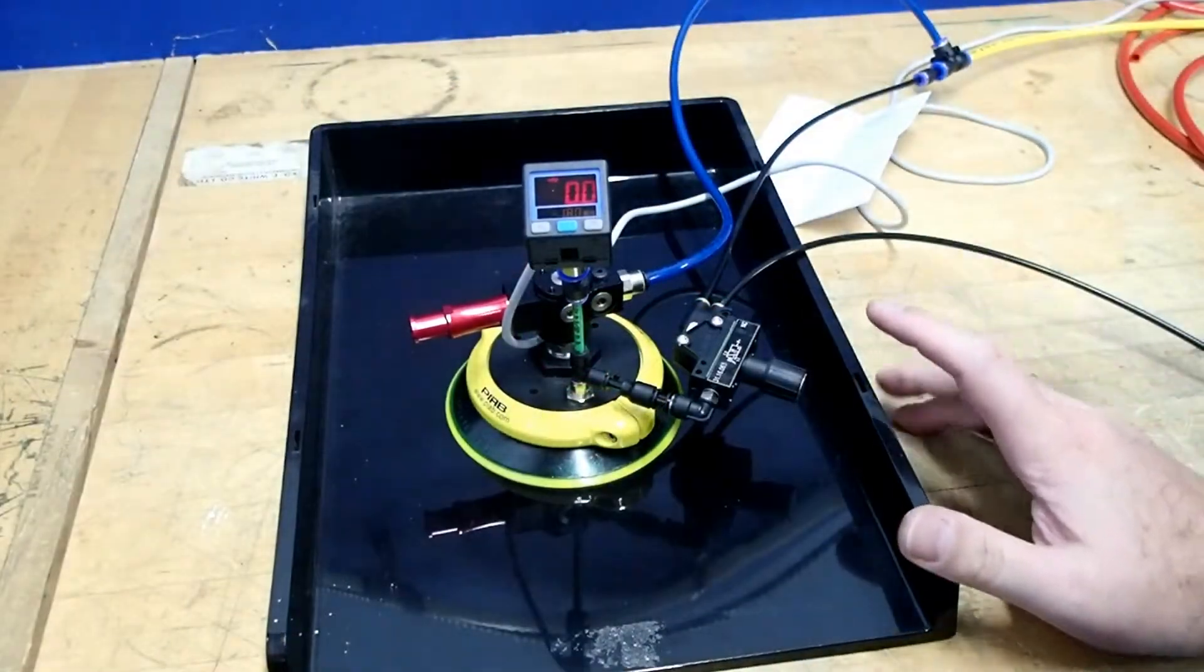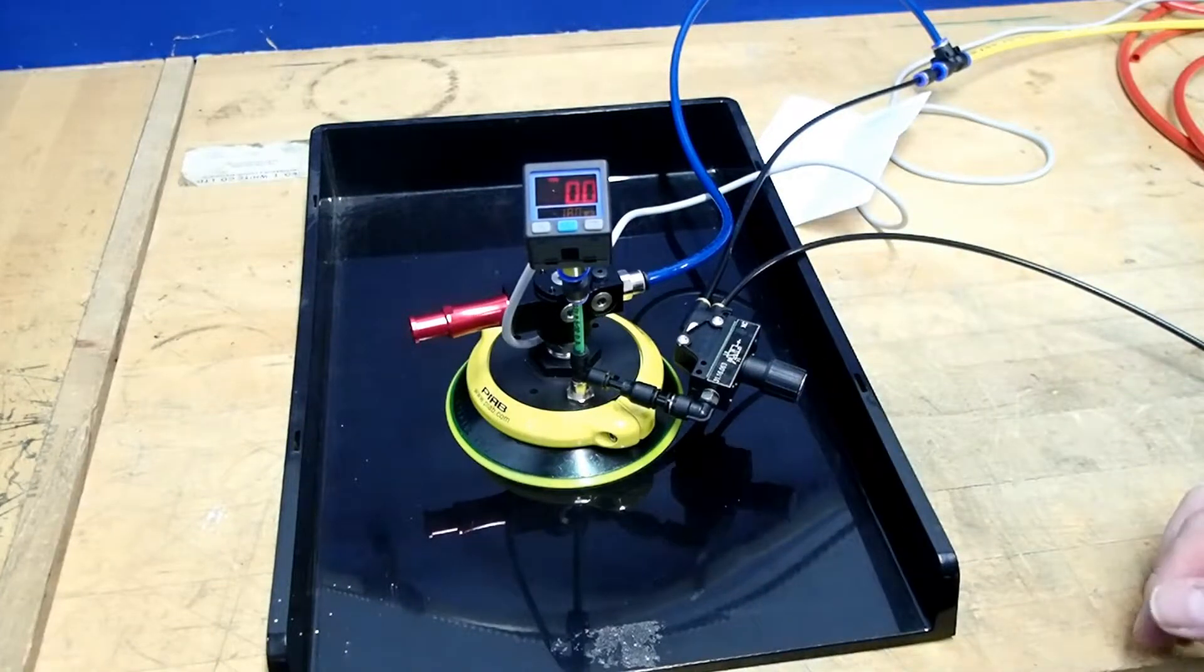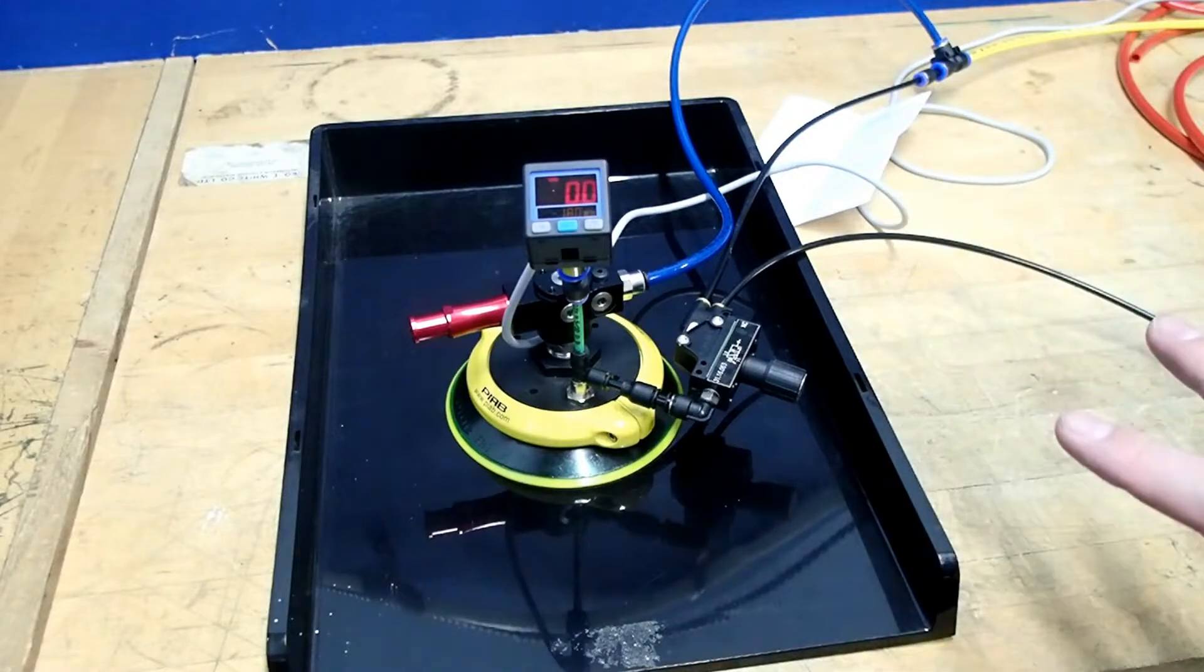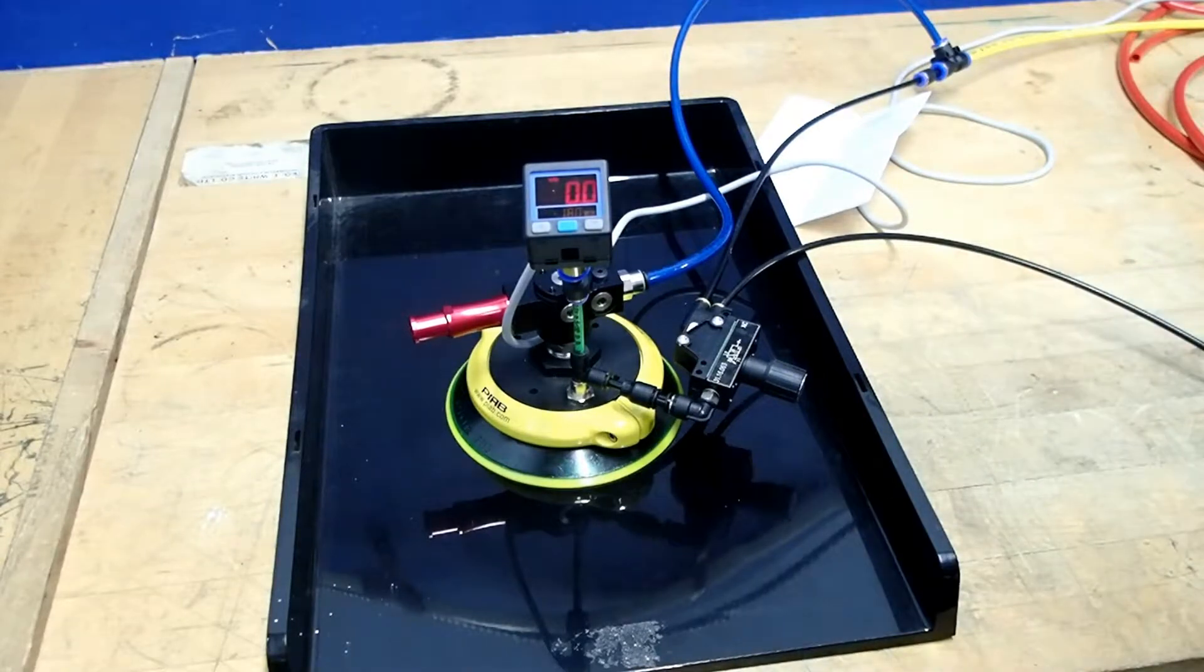Hi. Today I want to show you the pneumatic output vacuum switch from Piab, part number 3116063. This vacuum switch has a very unique property. Instead of outputting to an electrical signal as we're all used to, this one outputs to a pneumatic signal.